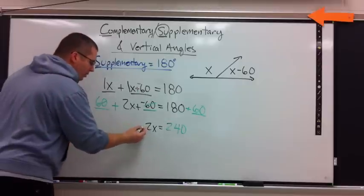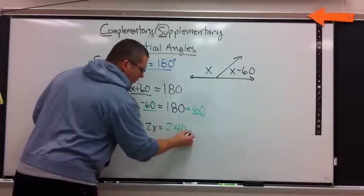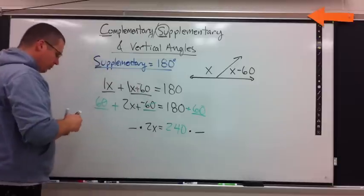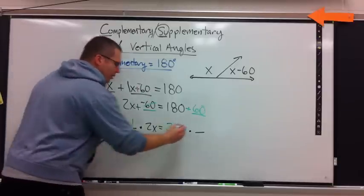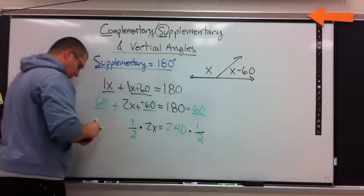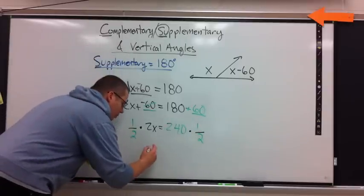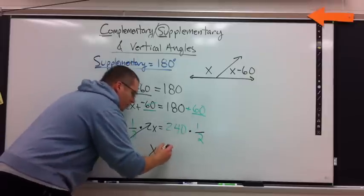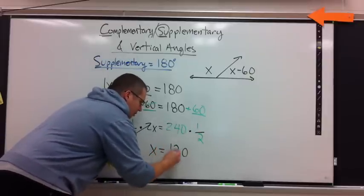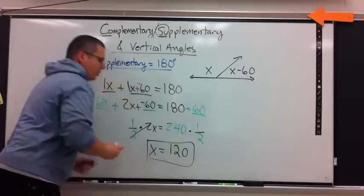How about 240? Get rid of the multiply 2. Multiply by the reciprocal of 2, which is 1 over 2. 2's cross off. I'm left with X. 1 half of 240 is 120.